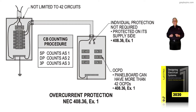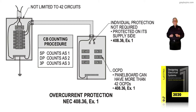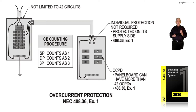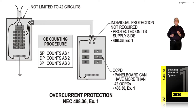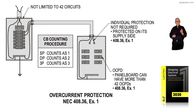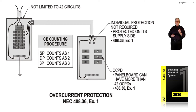This figure deals with overcurrent protection when Exception 1 to 408.36 is being applied. Notice in the service equipment to the left, we're not limited to 42 circuits. By the rules that changed in a couple of editions of the code in the past, we could have an 800-amp main there and have as many as 80 to 100-amp overcurrent devices below it — you weren't restricted to 42 circuits.